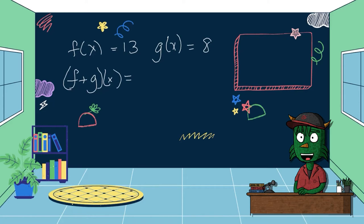f plus g of x is actually the same thing as just saying f(x) plus g(x), which is the exact same thing as we did before. It's 13 plus 8 is 21. So notice how this is just taking what we did before with the addition and putting them in terms of a function with the f(x) and the g(x).